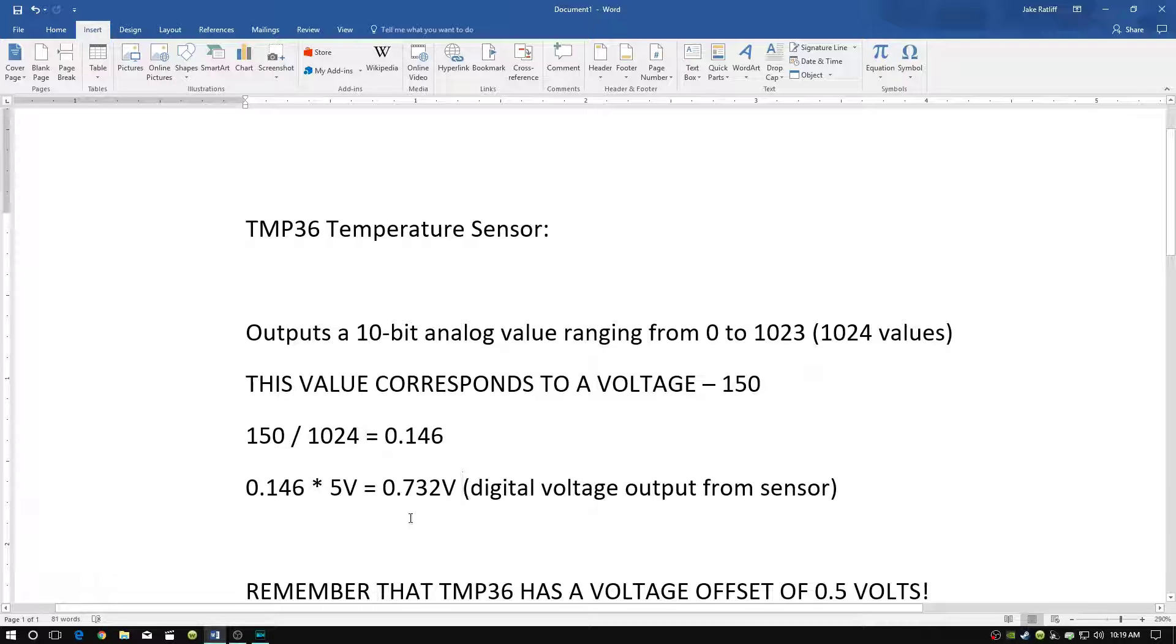And this number, 0.732, is directly related to 150, which is the analog value from the temperature sensor. So this is basically the voltage that's being output from the temperature sensor in numbers that is easier for us to read.